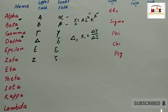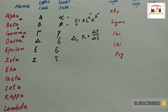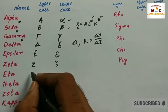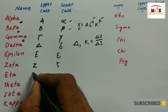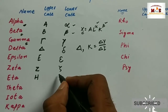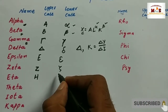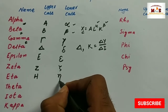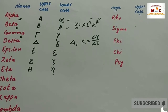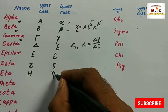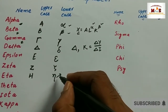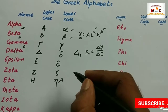The next one is eta. Its uppercase is like H and its lowercase is like this. This symbol is actually used in a formula — the formula to write deadweight loss.